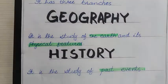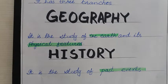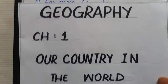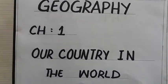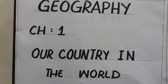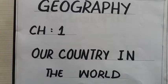The first chapter which we are going to start is from the geography section. The name of the chapter is 'Our Country in the World.' Everybody knows that the name of our country is Pakistan. Pakistan is our beloved country. As this chapter belongs to the geography section, it means that in this chapter we will discuss and study about the geographical features of Pakistan.